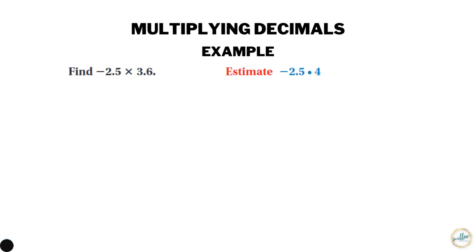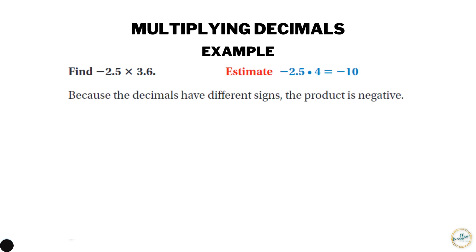Negative two and a half times four is negative ten. So because we have a negative and a positive, our answer is going to end up being negative.